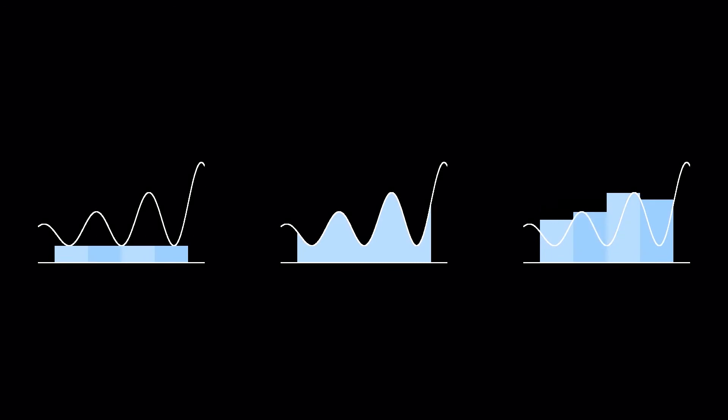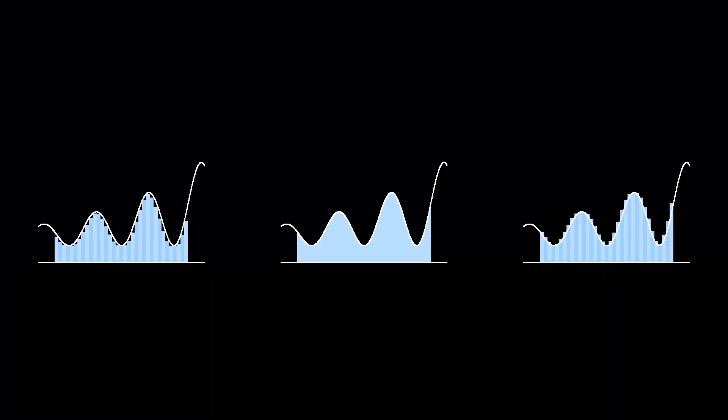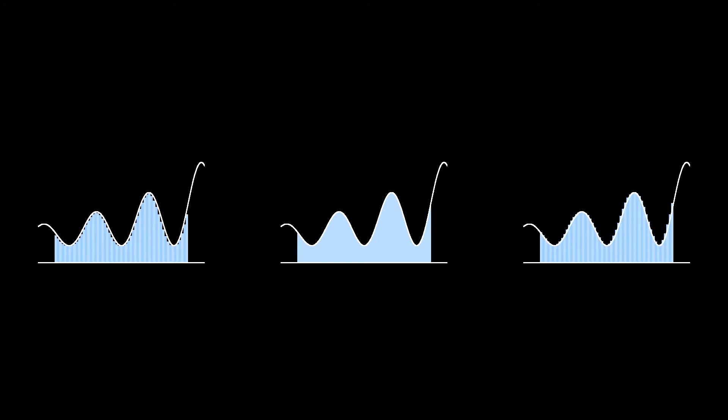Given the area of the rectangles always bigger than the area under the curve of our function, make it as small as possible. Similarly, given the area always smaller, make it as big as possible.